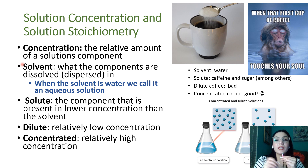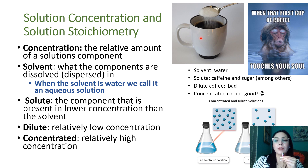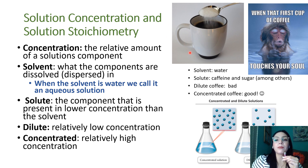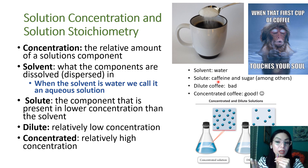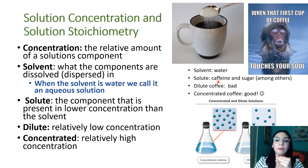Let's say you have a cup of black coffee and then you add sugar. The solvent will be the water. You will actually have several solutes — for example, caffeine, all the components that make it taste like coffee, the sugar, and so on.